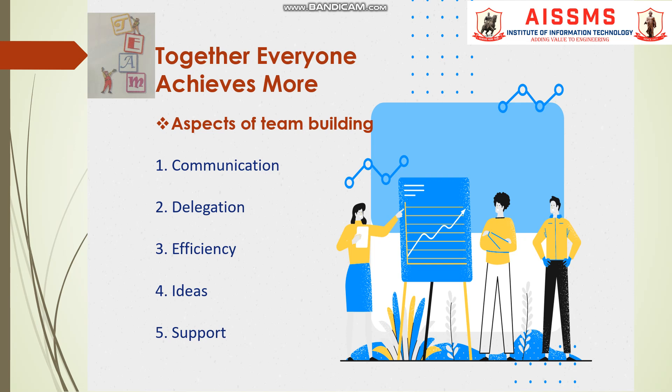The next aspect, delegation, means that teams that work well together understand the strengths and weaknesses of each team member, and the most appropriate tasks need to be allotted to the most appropriate team member. Efficiency means that a strong and cohesive team develops systems that allow them to collaborate efficiently to complete tasks in a timely manner.